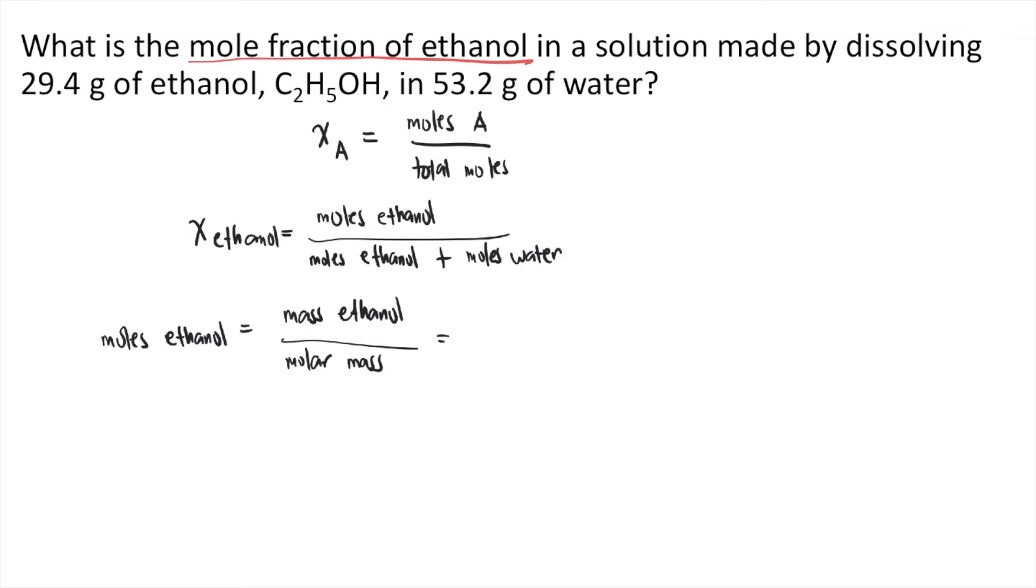The mass of ethanol given in the problem is 29.4 grams. If you solve the molar mass of ethanol, its molar mass is 46.068 grams per mole. So the grams cancel. 29.4 divided by 46.068, that's approximately 0.638 moles.